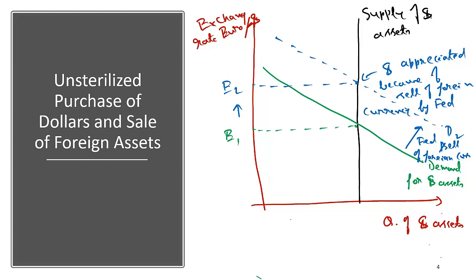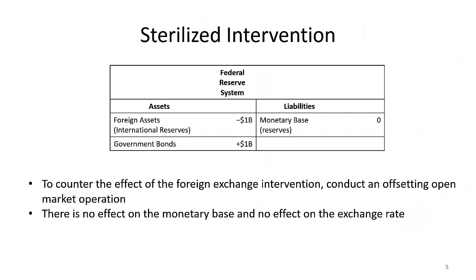Dollar appreciated because of the sale of foreign currency by the Fed. This is called unsterilized intervention because in this case the Fed is actually affecting the exchange rate. This is pretty much the same way China's People's Bank of China tries to affect the exchange rate by artificially increasing the demand for dollar assets.